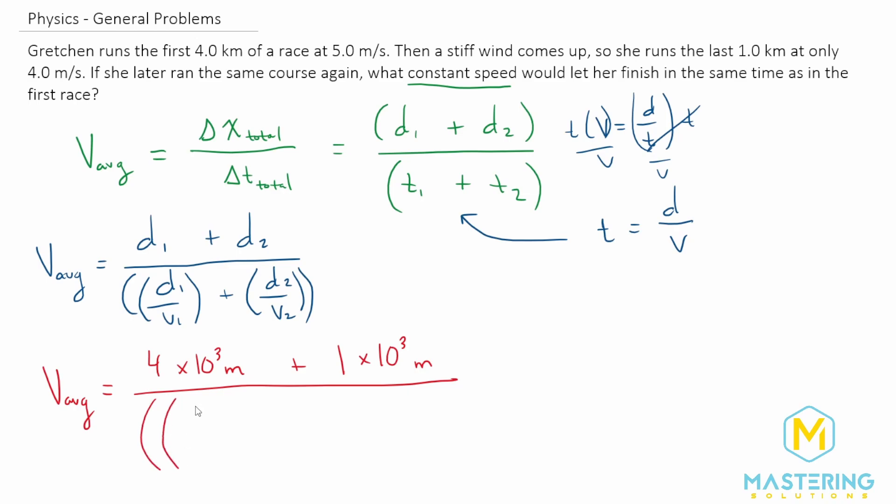...the distance one that she ran. Of course, we just said was 4 times 10 to the third meters, and then she ran that first time in 5 meters per second. Now we're going to add 1 times 10 to the third meters divided by 4 meters per second that she ran.